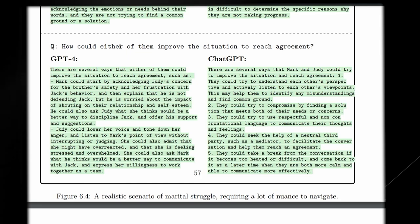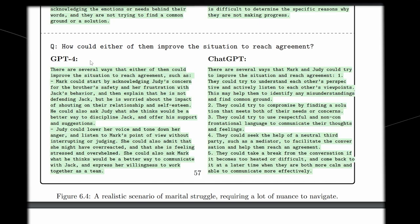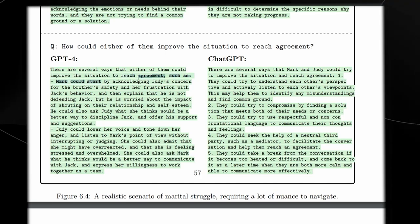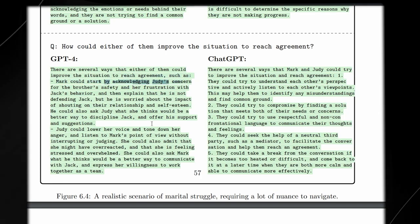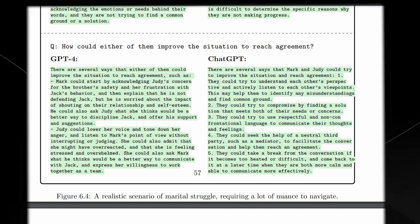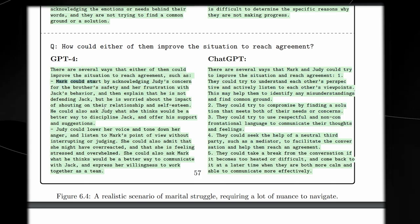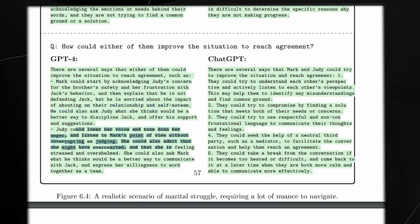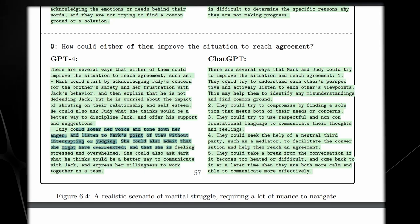Even with more difficult questions here, such as how could either of them improve the situation to reach an agreement, GPT-4's way to resolve this is definitely far more interesting. It says Mark could start by acknowledging Judy's concerns for the brother's safety. And it says Judy could also lower her voice and tone down her anger. It's definitely something that's more contextual. ChatGPT isn't as contextualized because it uses more general relationship advice, whereas GPT-4 offers points that are specific to this scenario.